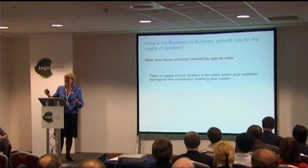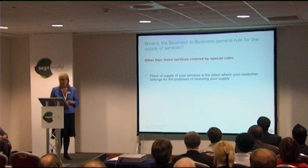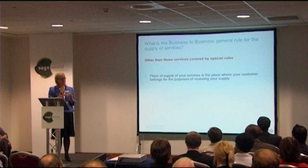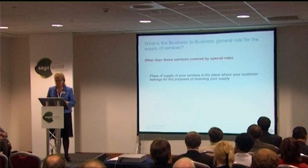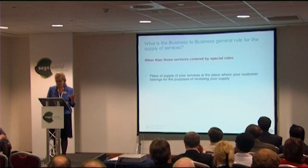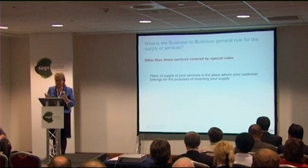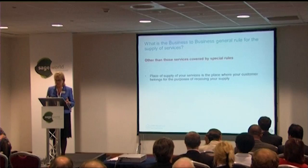The general rule — and as with anything to do with taxes, you have a general rule and then you have all the exceptions — the general rule for the place of supply of services, other than those covered by the special rules, is that the place of supply is where your customer belongs for the purpose of receiving the supply. So if you're registered in the UK and your customer is registered in Germany, for example. Services such as intermediary services, transport of goods, ancillary transport services, valuation of or work on goods, et cetera — there is a readily available list — are included in this basic rule.